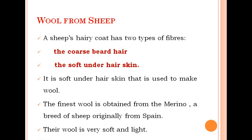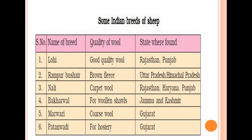A sheep's hairy coat has two types of fibers: the coarse heavier hair and the soft underhair. It is the soft underhair that is used to make wool. The finest wool is obtained from the Merino, a breed of sheep originally from Spain. Their wool is very soft and light, which are the characteristics of Merino wool.